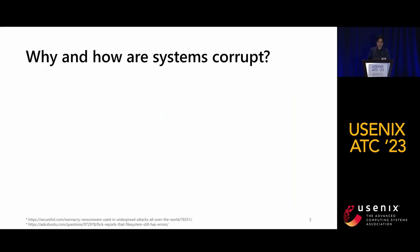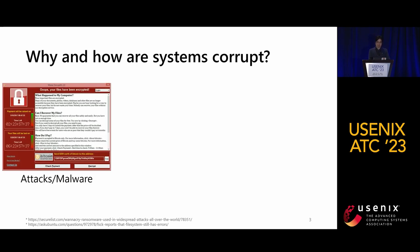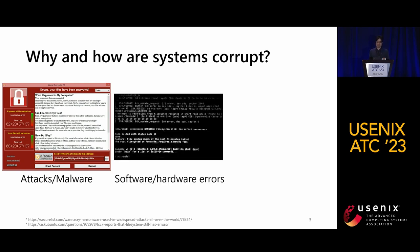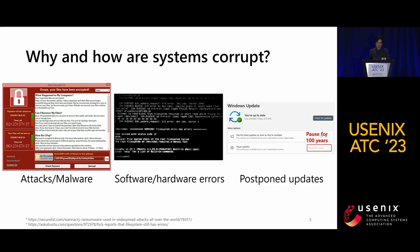Why are our devices or systems corrupt? Who corrupts them and how? There might be three notable cases. First, the system might be corrupted due to some attack or something like malware. For example, ransomware would be the most popular example that tries to encrypt some data in your devices, after which your system will not work. Second, the system might get corrupted due to software and hardware errors like file system errors. Third, the system might be corrupted due to some postponed updates or patches — an outdated system is corrupted because you can no longer ensure its valid operations.